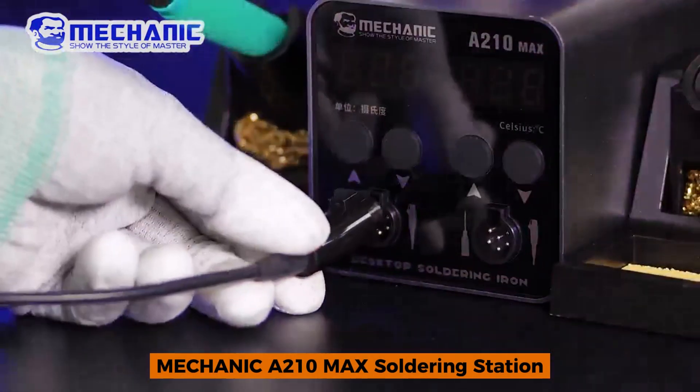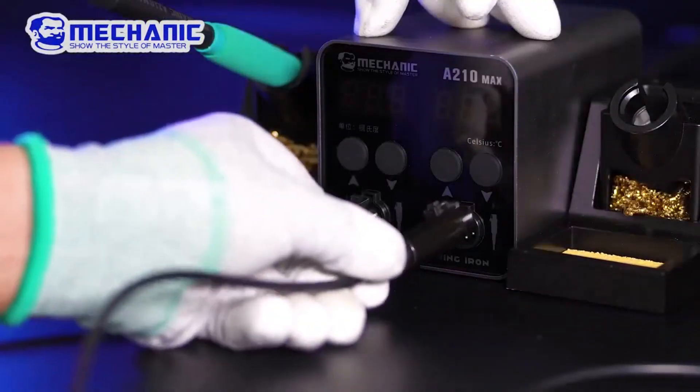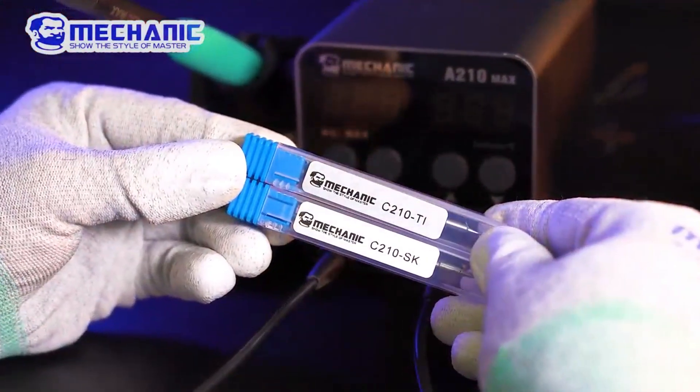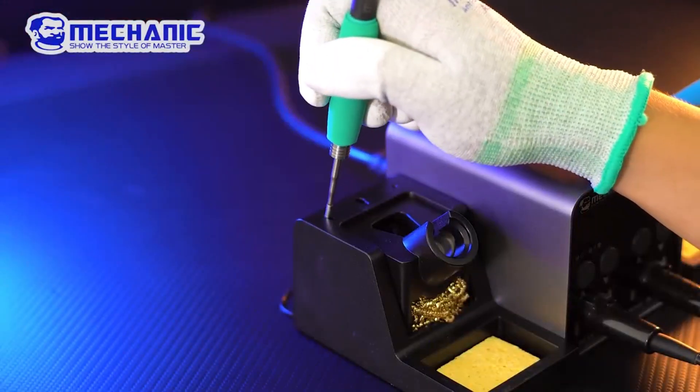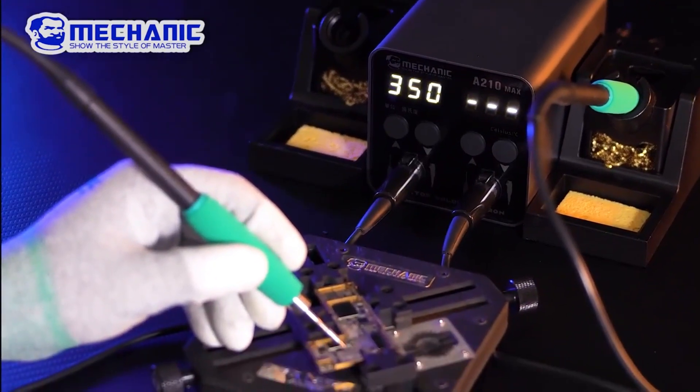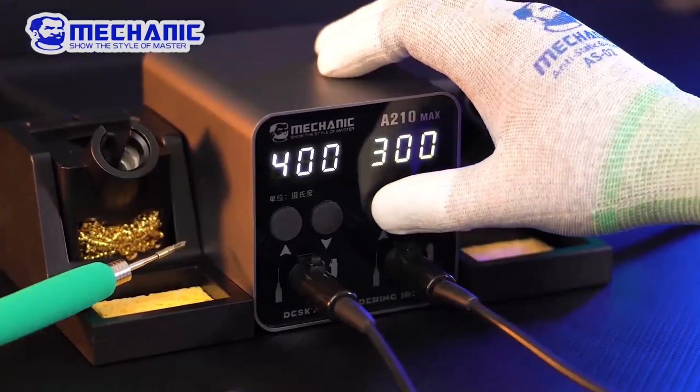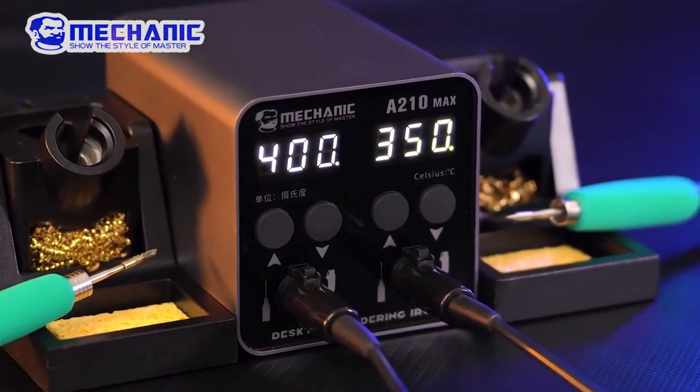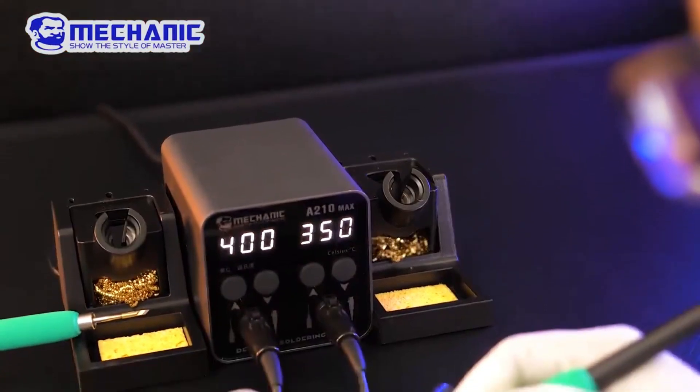Number 1 Mechanica 210X Soldering Station. The Mechanica 210X is a powerhouse for professionals. It's a dual workstation that ensures consistent temperature with its universal C210 tips. The compact design, LED digital display, and fast heating make it perfect for precision work like phone repairs and PCB soldering. Its sleep function also saves energy and prolongs the life of the soldering tips.